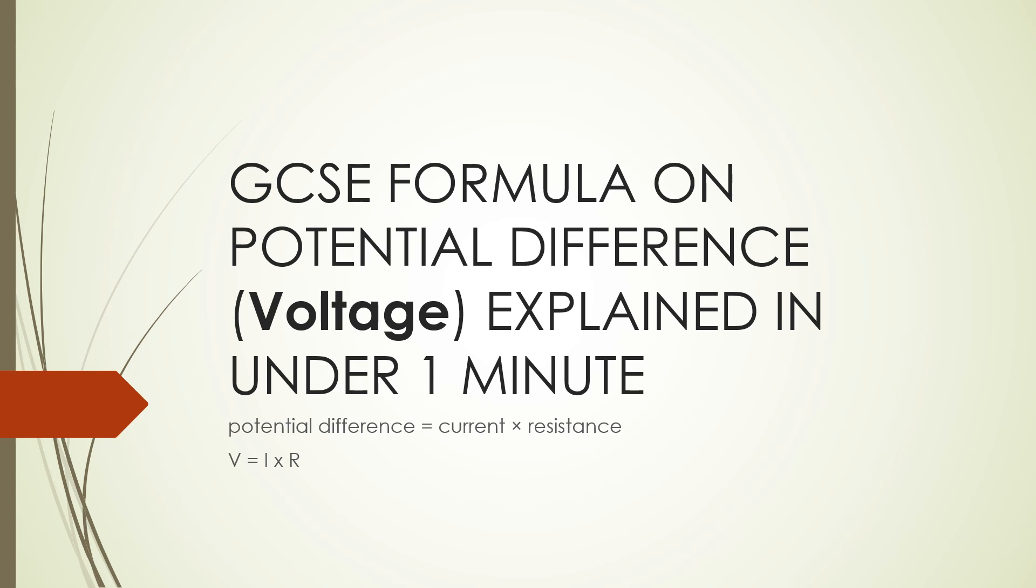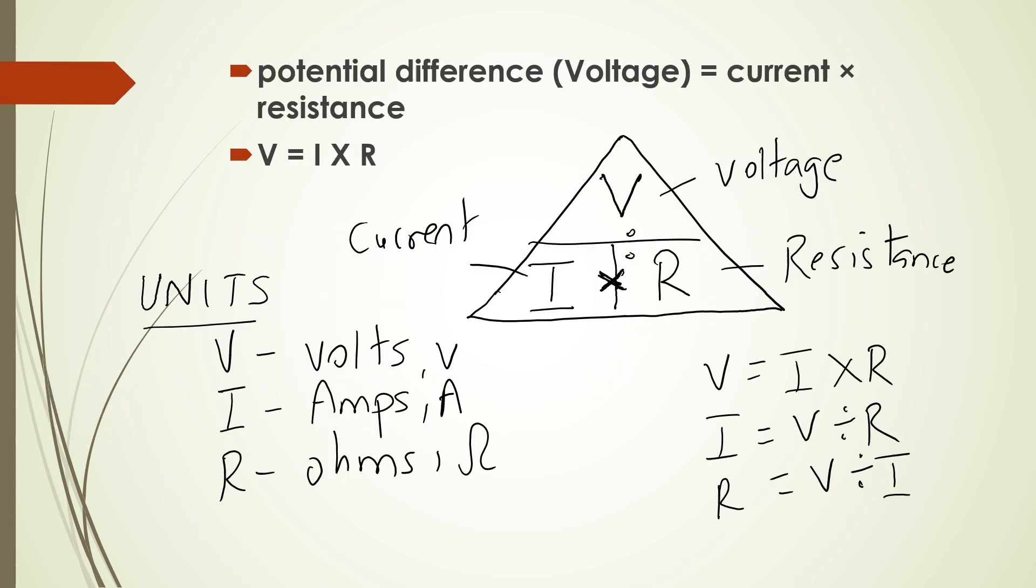Voltage, which is also known as potential difference. The formula is voltage equals current times resistance. I'll bring it out in the triangle for you as well. For calculating the voltage, it's current multiplied by resistance.